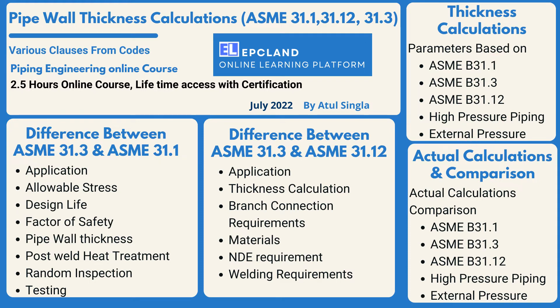Once we understand all the parameters in detail, we'll actually do the calculations. Pipe wall thickness will be calculated with respect to 31.1, 31.3, and 31.12. We'll take one example, look into each parameter per the codes, go to those tables, pick those values, and calculate pipe wall thickness. Then we'll do calculations for external pressure piping and high pressure piping as well.